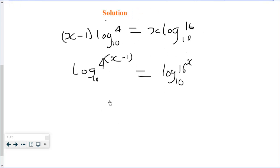Now, taking the antilog of both sides, we have 4 to the power (x - 1) is equal to 16 to the power x.